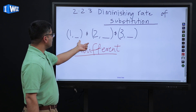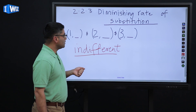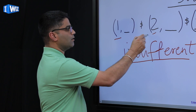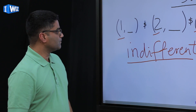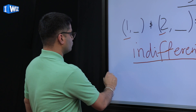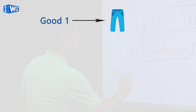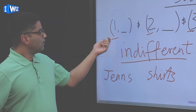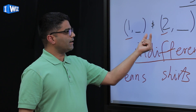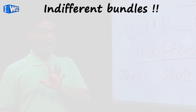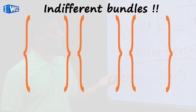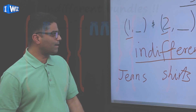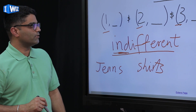As long as you're indifferent between these bundles, which means you're equally happy, let's take an example. Let's say you have one jeans and you are thinking about getting an extra unit of jeans. The two goods are jeans and t-shirts. As we keep getting an extra unit of jeans, think about how many t-shirts you're willing to give up and leave you equally happy. It's very important for you to understand that you're going to be equally happy.